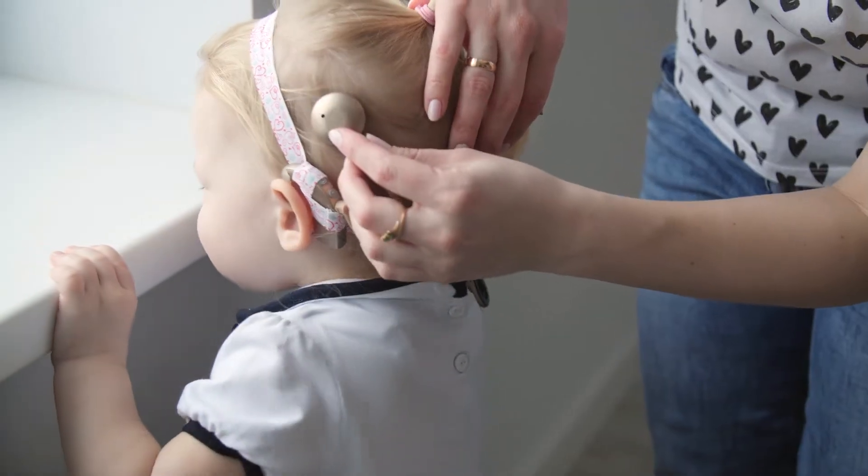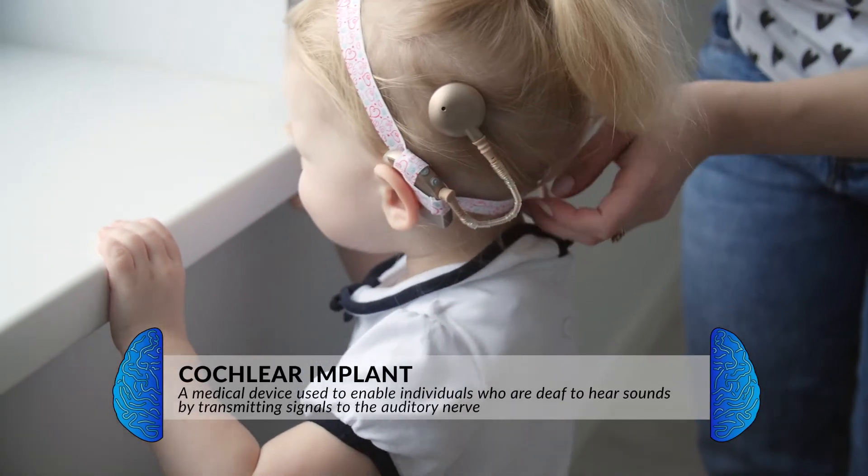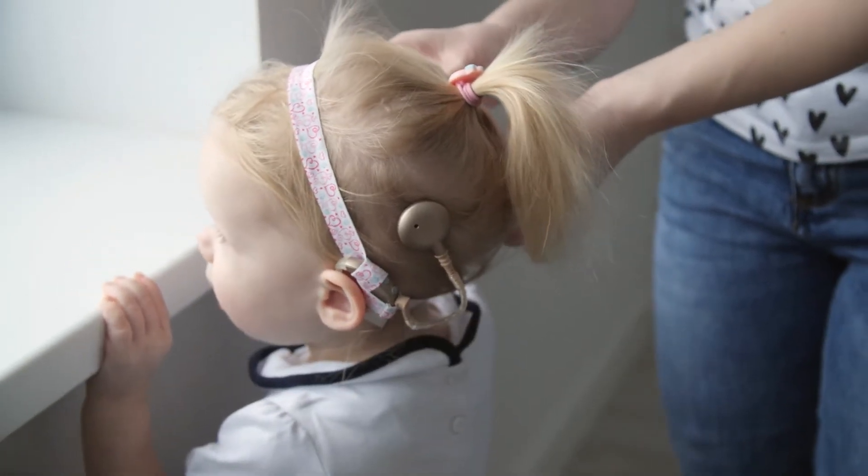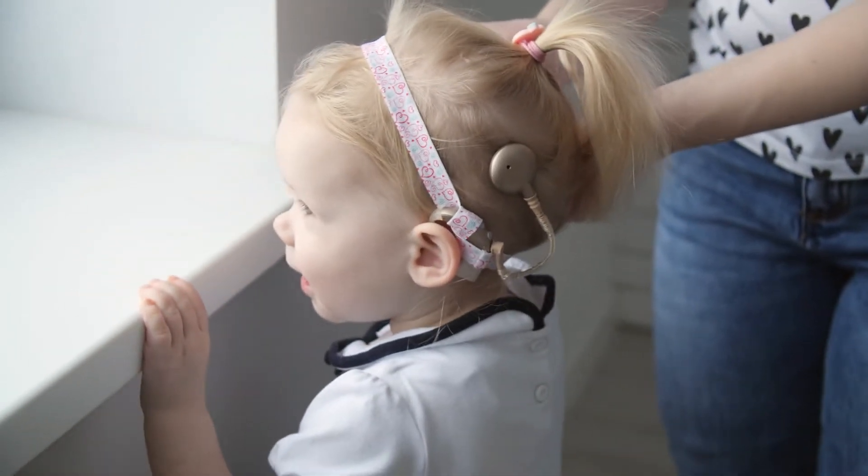One way in which hearing loss can be treated is by a cochlear implant. This is a device that converts sounds into electrical signals. These signals then help stimulate the auditory nerve and allow for the signals to be sent to the brain. Another medical device that is used to treat hearing loss is a hearing aid, which simply amplifies the sound.